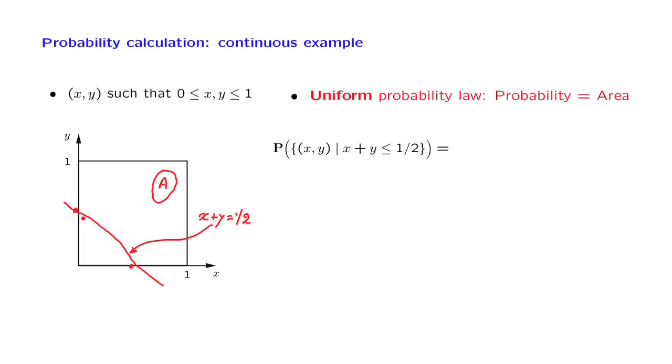Anything below that line, these are the outcomes that make this event happen. So we're trying to find the probability of this red event. We have assumed that probability is equal to area, therefore the probability we're trying to calculate is the area of a triangle. And the area of a triangle is 1 half times the base of the triangle, which is 1 half in our case, times the height of the triangle, which is again 1 half in our case, and the end result is 1 over 8.